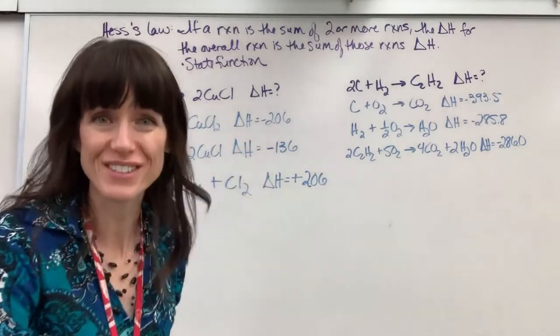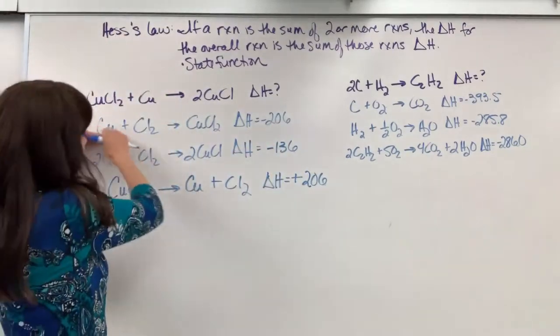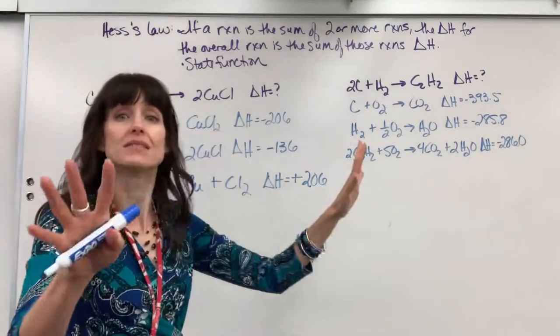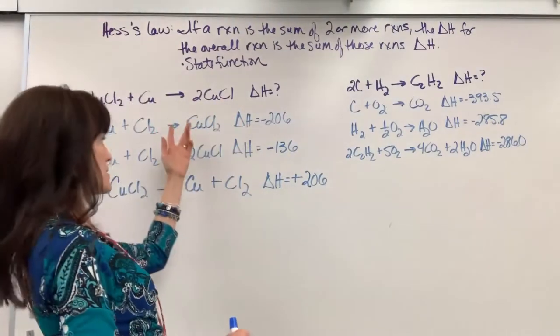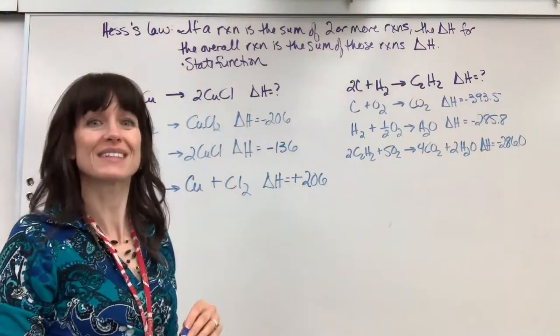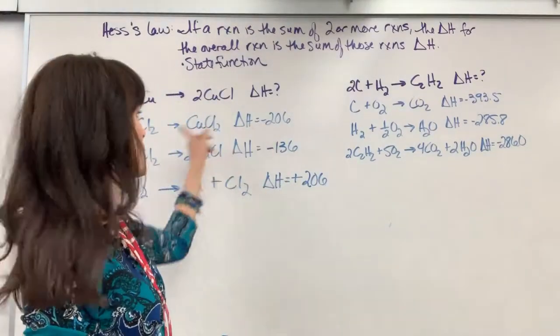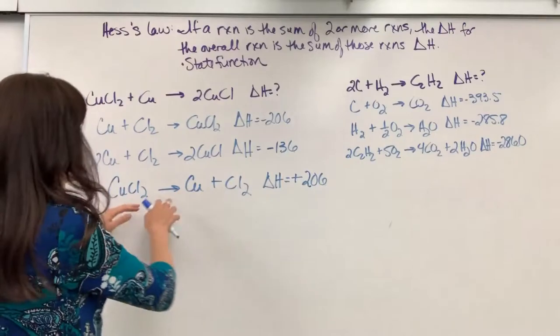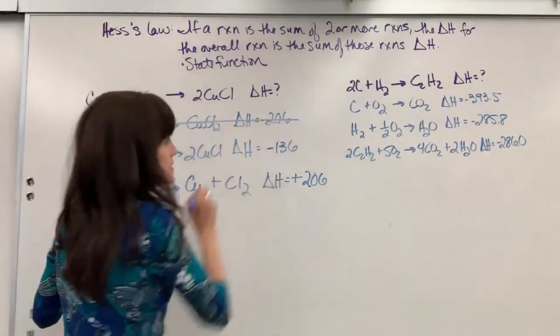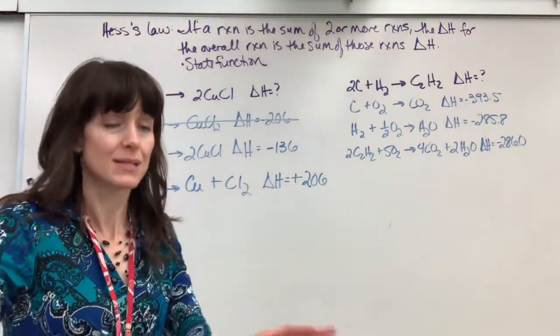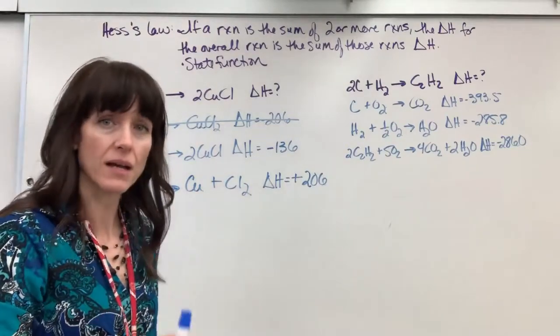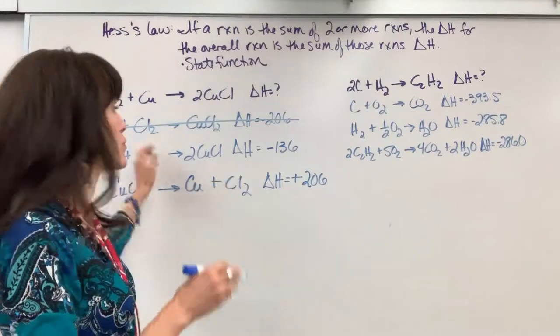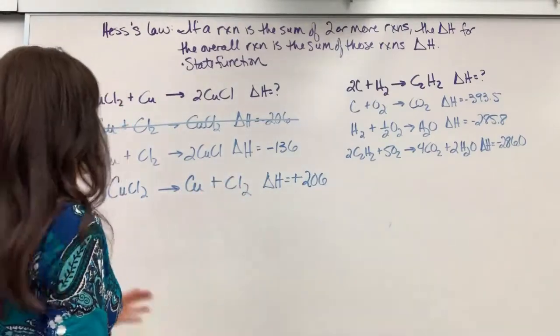I'm going to flip this reaction, and we will get copper two chloride yields copper plus chlorine, and the delta H for this becomes a positive 206 kilojoules per mole. I just didn't take the time to write that down. Now, conservation of energy. When this reaction happens, it releases 206 kilojoules per mole. But if I reverse it, that means I've got to put 206 kilojoules into it to make that go in the reverse direction. So I flip this. I'm going to go ahead and cross this out. It's okay. Give yourself space. It's easier than erasing and going back. Just take another line, write it down, cross out what you've changed.